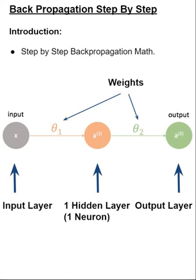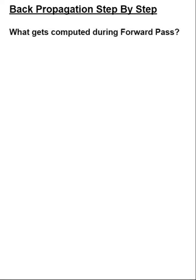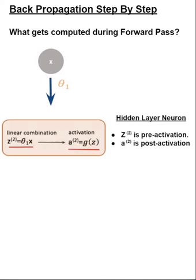Now that we have the network defined, let's look into the neurons in more detail and understand what gets computed in each neuron as part of the forward pass. The hidden layer neuron has two components: z superscript 2, indicating the linear combination of input times the weight theta1, and A superscript 2, which is the activation function applied on Z — in this case a sigmoid function — giving us the post-activation value.